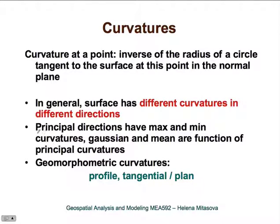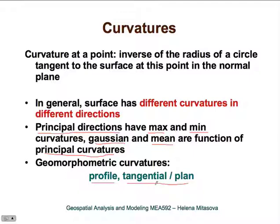There are so-called principal directions where we have maximum and minimum curvatures. Two curvatures are especially important in geomorphometry: profile curvature, which is measured in the direction of gradient, and tangential or plane curvature, which is measured in the direction perpendicular to the gradient—the direction tangent to the contours. Plane curvature is essentially the curvature of contours.